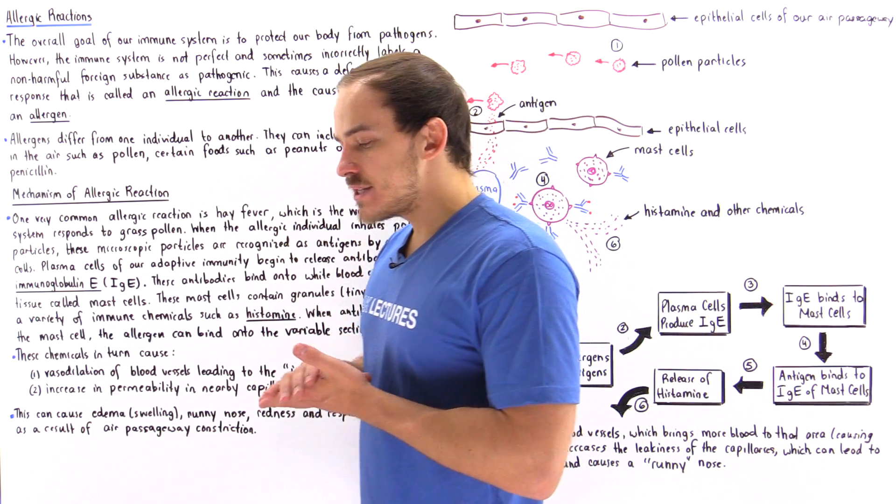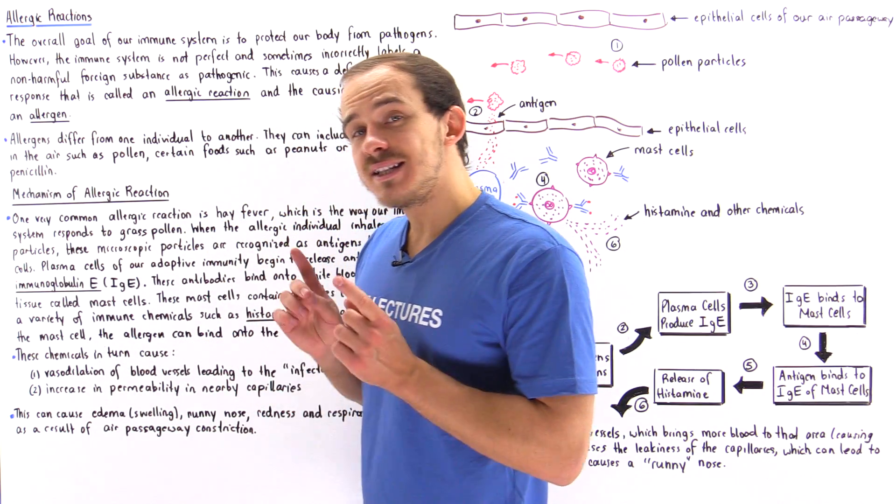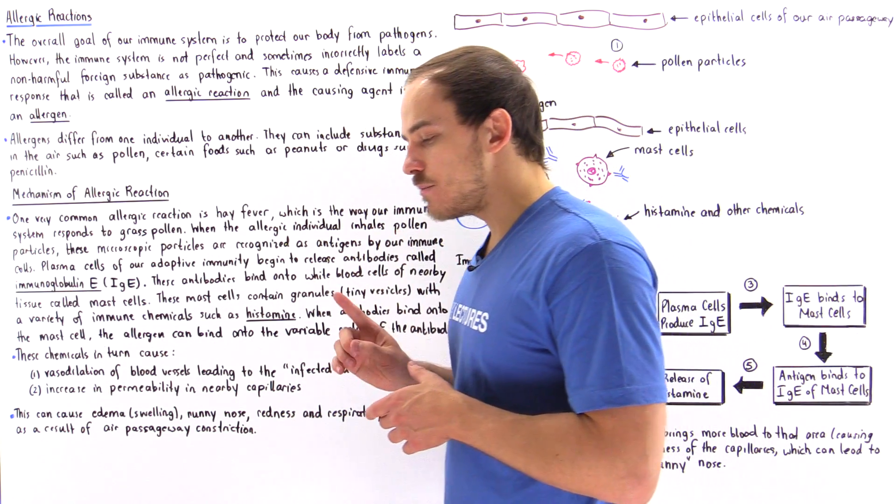It's to generate and maintain a state of homeostasis. Now as with many things in life, our immune system is not a perfect system and sometimes it does make mistakes.